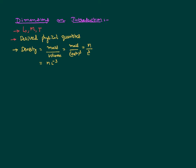If you look at the dimensional formula of density, I have expressed it as mass to the power 1 and length to the power minus 3. This M L power minus 3 — without any time dimensions, meaning time to the power 0 — is called the dimensional formula for the physical quantity density. The power of mass is 1 and the power of length is minus 3. These powers are called dimensions. So, a dimensional formula is simply the representation of a physical quantity in terms of fundamental quantities, and we can try writing dimensional formulas for different physical quantities.